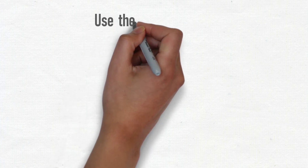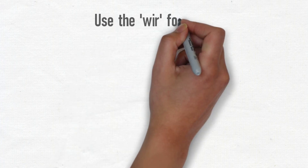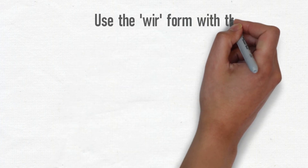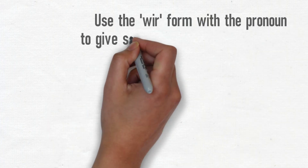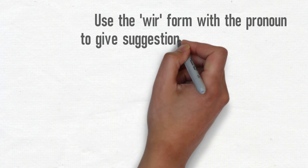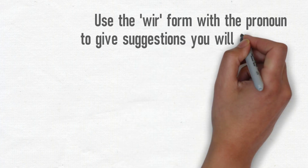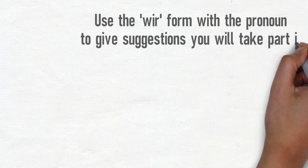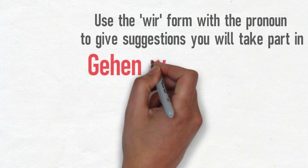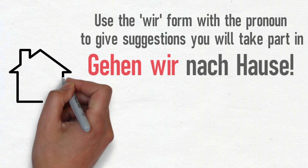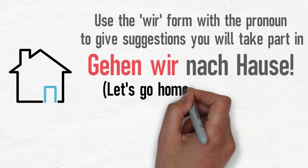Another useful thing to know about the imperative is that you can use the wir form of the verb along with the pronoun itself to make suggestions that you personally will take part in. For example: Gehen wir nach Hause — Let's go home.